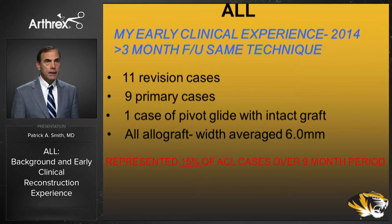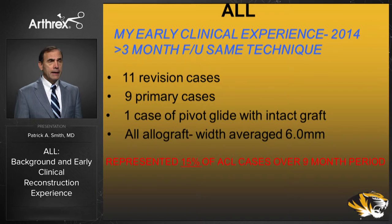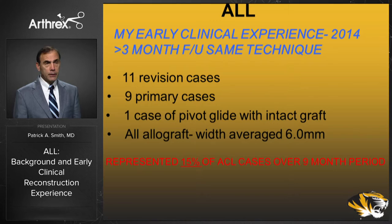This is my early clinical experience from 2014 — patients with greater than three-month follow-up. In this cohort I had 11 revision ACL cases with ALL, 9 primary ACL cases with ALL, and one pivot-glide case with an intact vertical graft. I elected to use allograft, being comfortable with it in an extra-articular location. Graft width was six millimeters. Importantly, this cohort represented only about 15 percent of my ACL cases over a nine-month period — so about 15% of the time I will add an ALL.